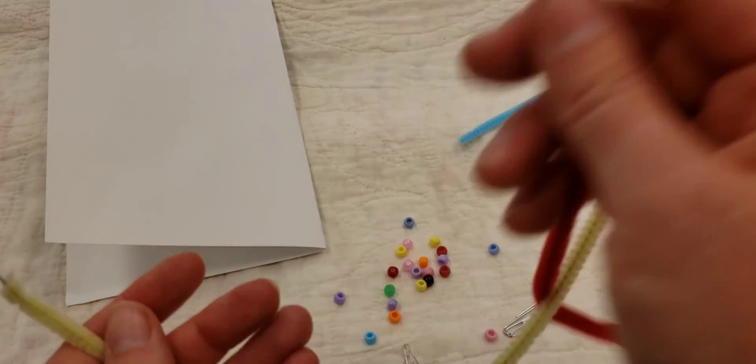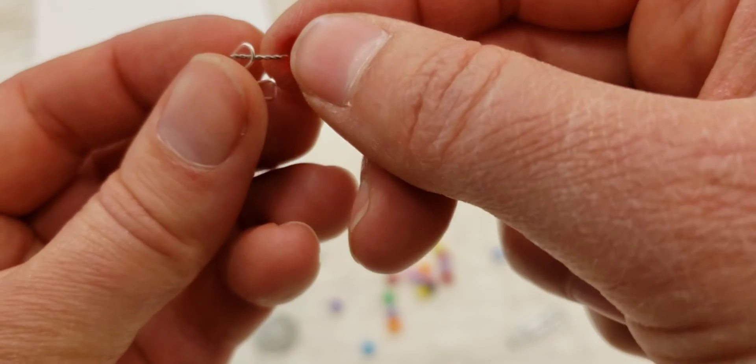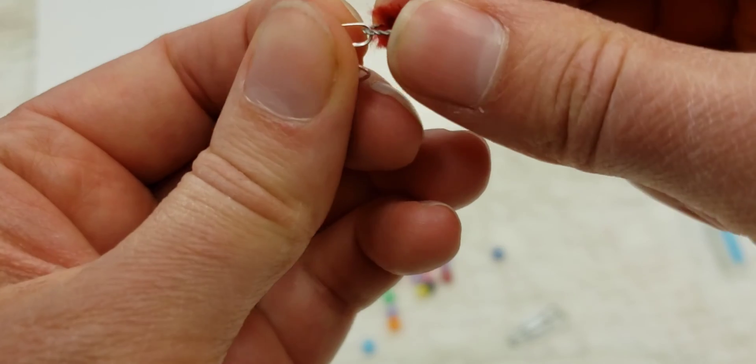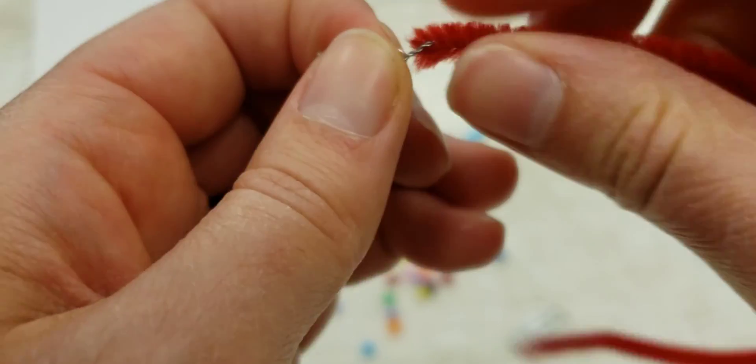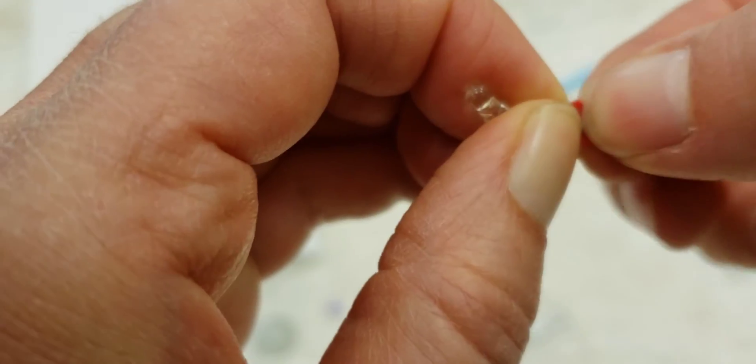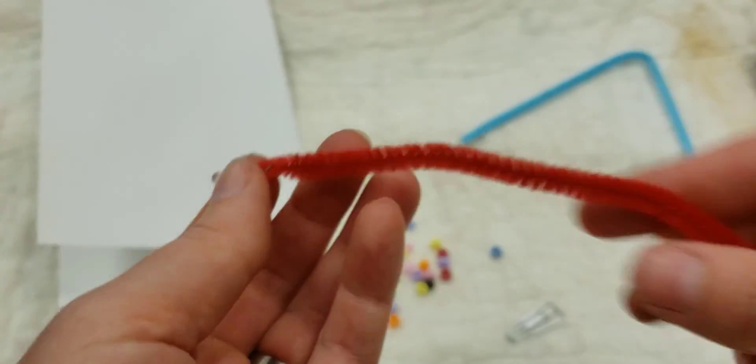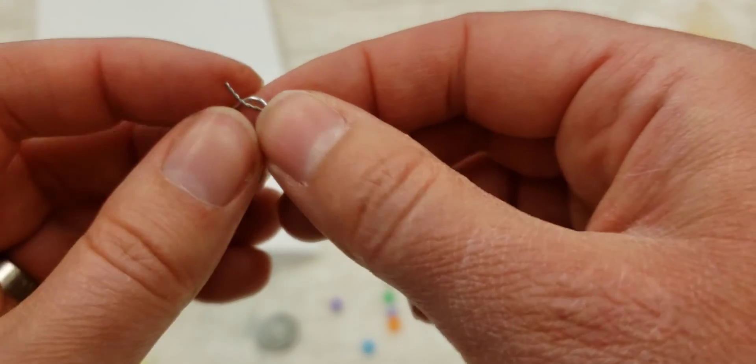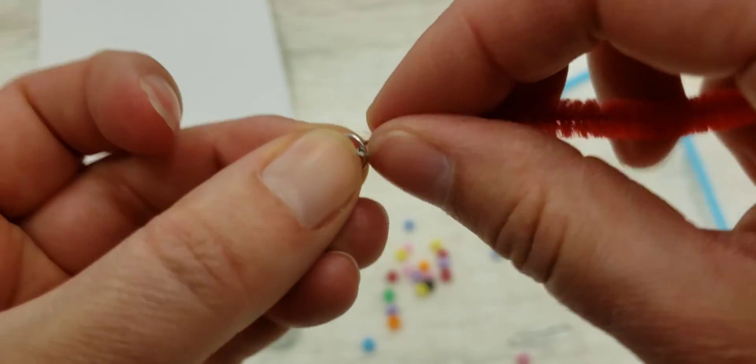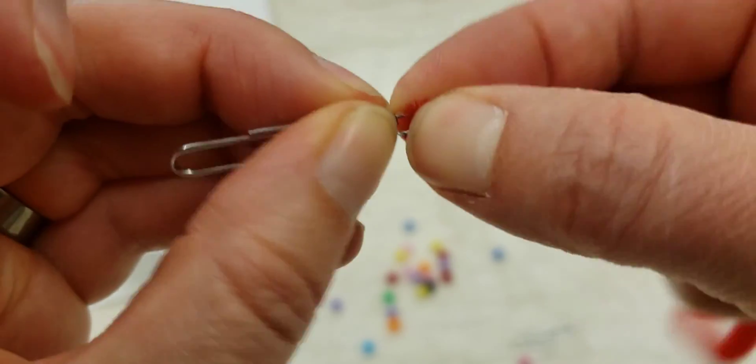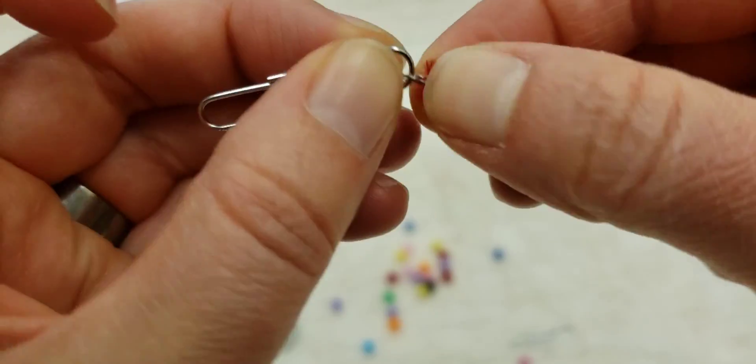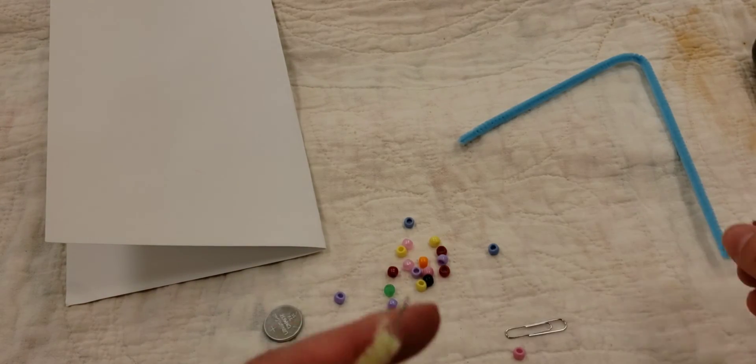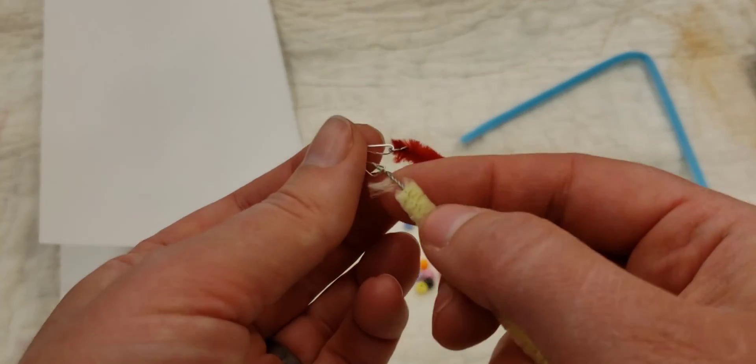So one end of each color is going to go around your LED light. You want to make sure that it touches it really well and the other end is going to go around one of your paper clips. Okay I'm going to do the same thing on the other side with my other two colors.